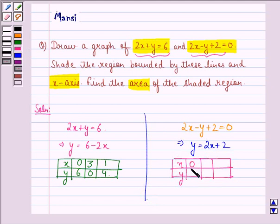So, three points lying on this line will be: when x is 0, y is 2; when x is minus 1, y is 0; when x is 1, y is 4.